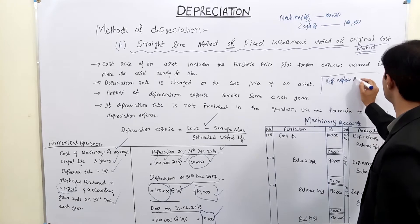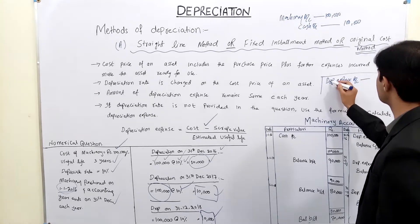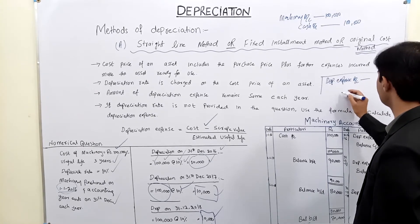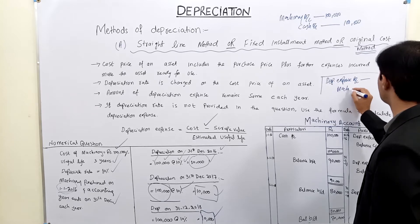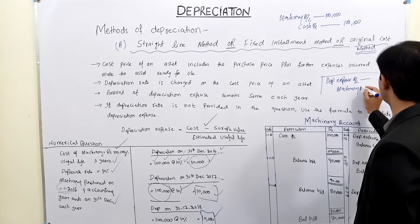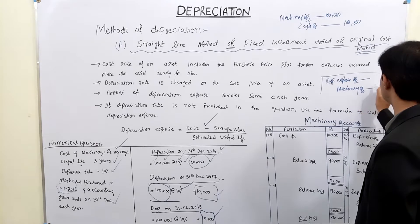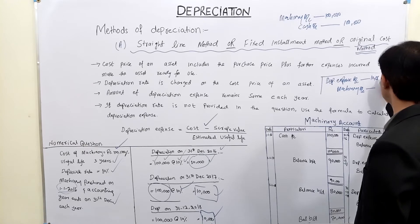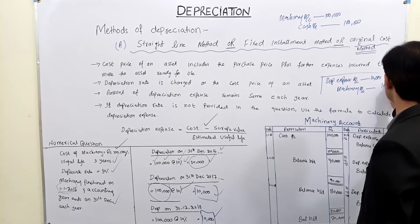The journal entry is: Depreciation Expense debit, Machinery Account credit. The amount is 10,000, and this same entry will be recorded every year.